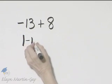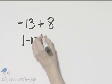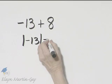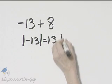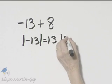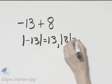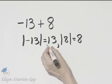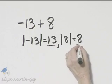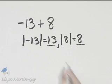The absolute value of negative 13 is 13, and the absolute value of 8 is 8. So we now subtract their absolute values.